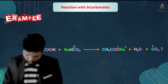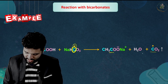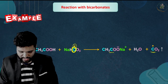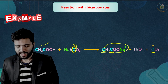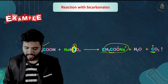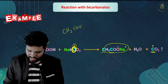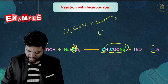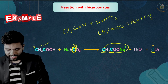In the bicarbonate test, carboxylic acid reacts with sodium bicarbonate (NaHCO3). The products are the salt of carboxylic acid, water, and CO2 gas. You can observe CO2 gas being released as bubbles. This confirms the presence of the carboxylic group in the compound.